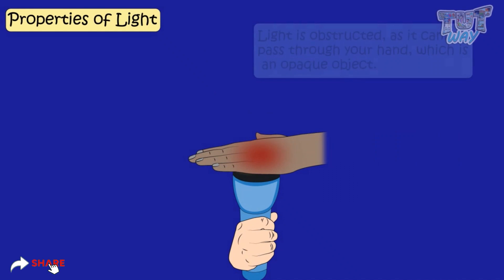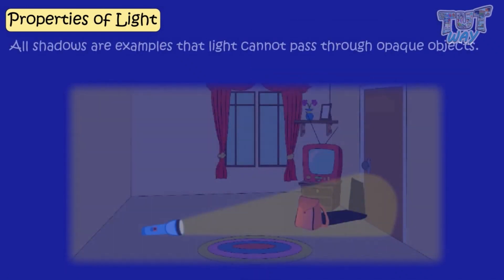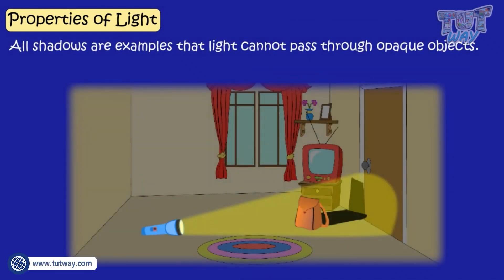Light is obstructed as light cannot pass through your hand, which is an opaque object. All shadows are examples that light cannot pass through opaque objects.